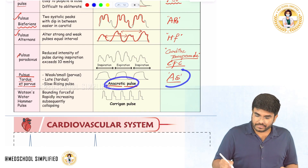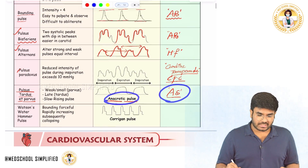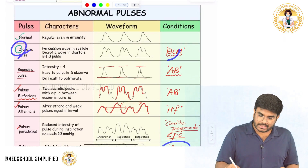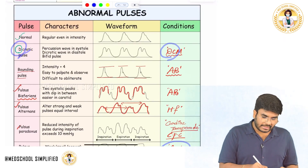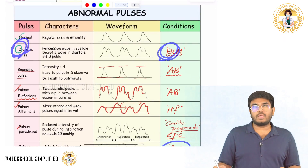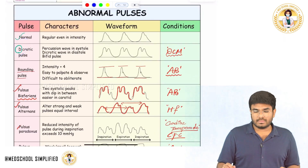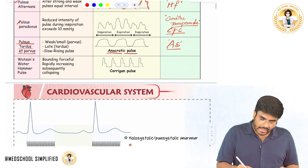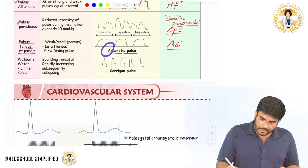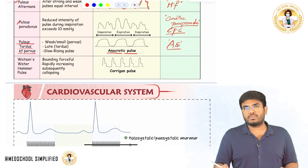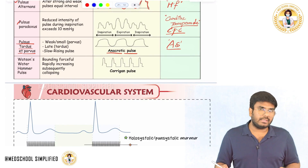Don't confuse: anacrotic pulse — aortic stenosis, A for A. Dicrotic pulse — DCM, D for D. Dicrotic pulse is seen in dilated cardiomyopathy. Anacrotic pulse is seen in aortic stenosis.